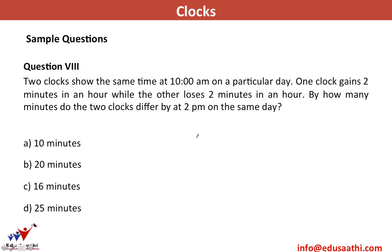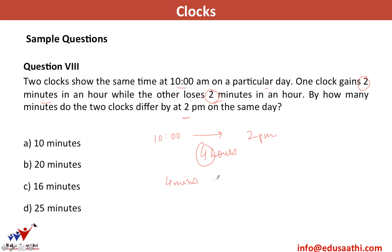Sample question 8: two clocks show the same time at 10 a.m. One gains 2 minutes per hour, the other loses 2 minutes per hour. By how many minutes do they differ at 2 p.m. the same day? From 10 a.m. to 2 p.m. is 4 hours. Each hour the gap between them is 4 minutes (2 gained + 2 lost). In 4 hours: 4 × 4 = 16 minutes difference.